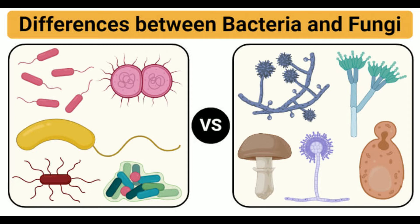Cell type: All bacteria are prokaryotes. All fungi are eukaryotes. Number of cells: Bacteria are unicellular organisms with simpler cellular structure. Most fungi are multicellular with complex cellular structures, though some fungi like yeast might be unicellular.